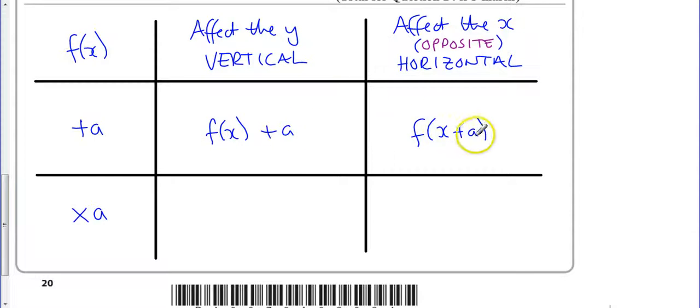This one does a vertical shift up and down. This one does a horizontal shift left or right, but does the wrong way. So plus a goes to the right, minus a goes to the left, whereas plus a goes up, minus a goes down. You might need to go and look this up because it's a little bit weird, but you'll get the trick of what's going on.